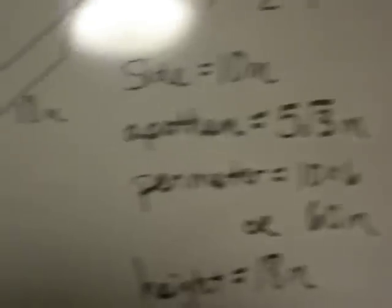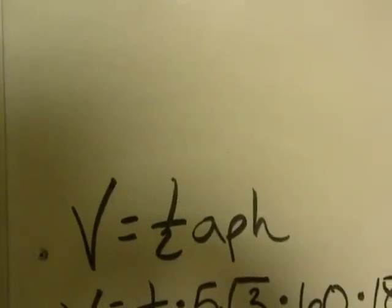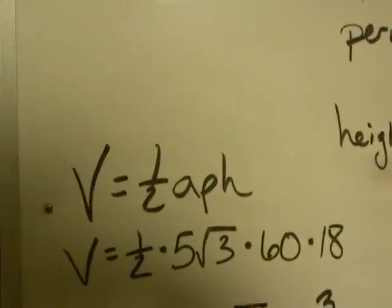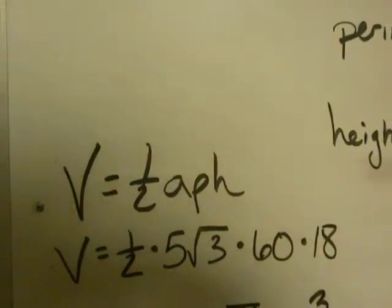So let's plug in our information. The volume is one-half apothem times perimeter times height. So the volume equals one-half, multiplied by 5 radical 3, times 60, times 18.